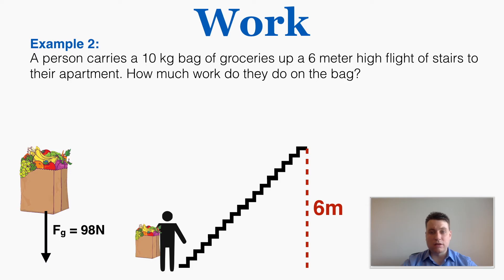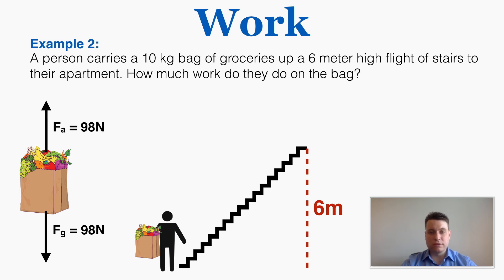There's a force of gravity of 98 Newtons going down. Since the bag is moving at a constant velocity, the net force must be zero — there's no need for a special force pointing diagonally up the stairs. The person just applies an upward force equal to the downward force of gravity: if the bag pulls down with 98 Newtons, the person pushes up with 98 Newtons.